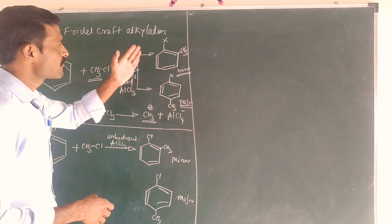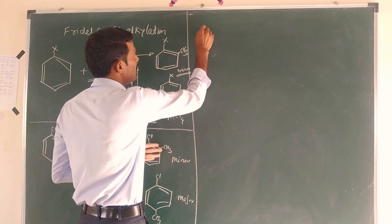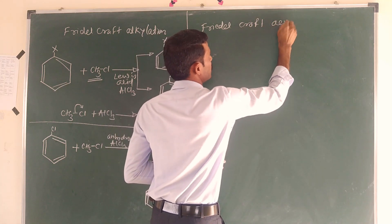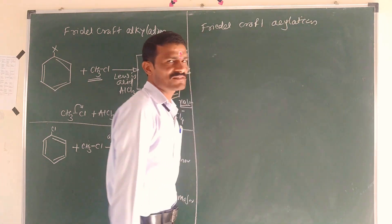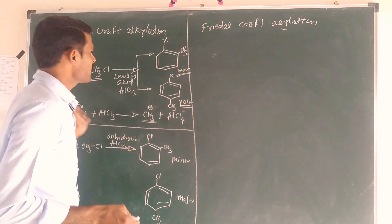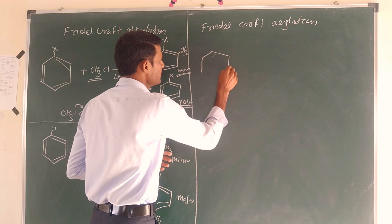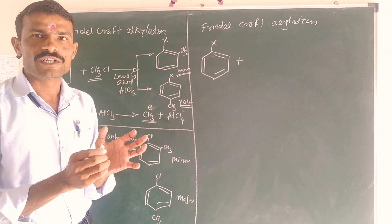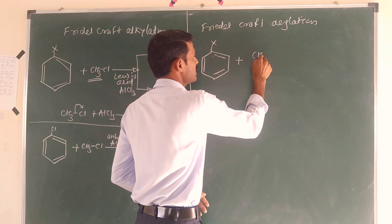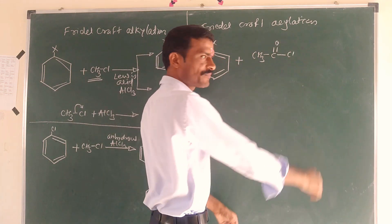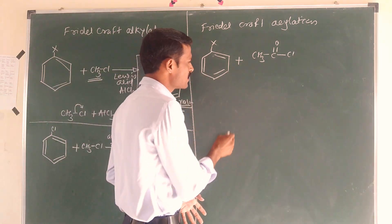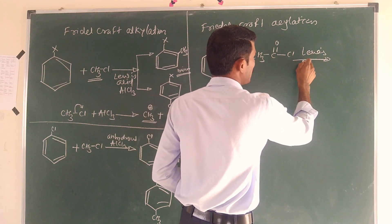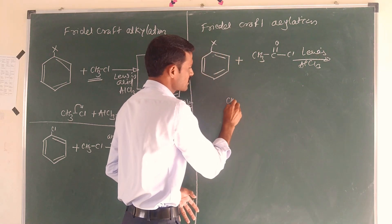What we call Friedel-Craft Acylation — here I have to say which one is the acyl group. The acyl chloride is represented as CoCl, so that is the acyl group. For example, CH3COCl. Using Lewis acid AlCl3, it reacts and you can form the electrophile.